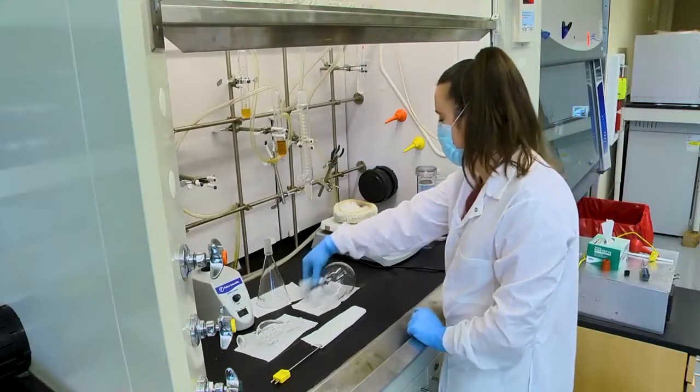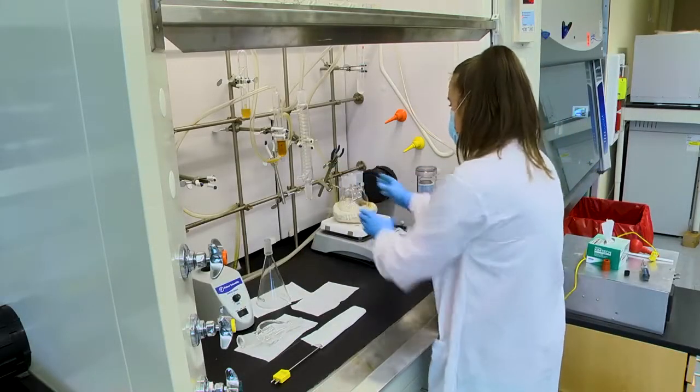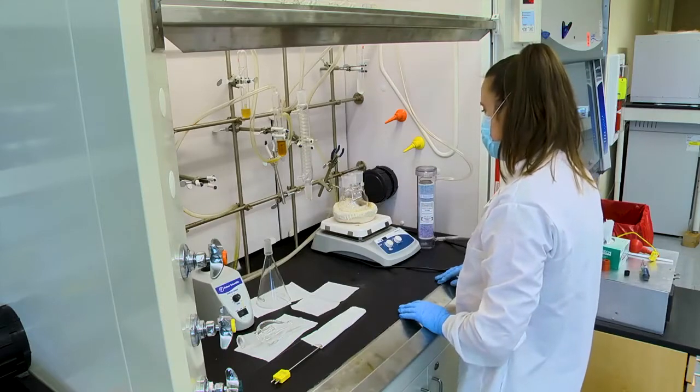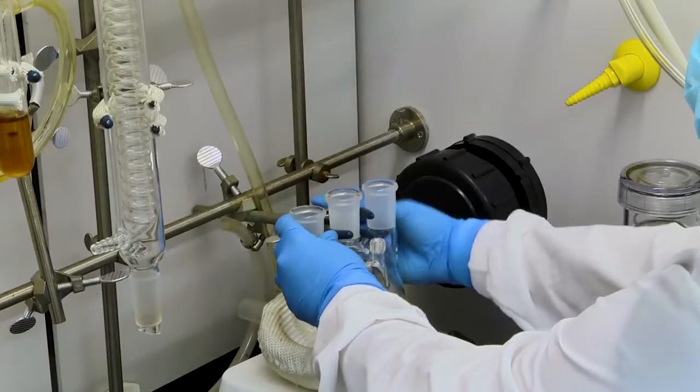Before beginning an experiment, place a four-neck, 500-milliliter round-bottom flask onto the heating mantle and secure the middle neck with a metal claw clamp.